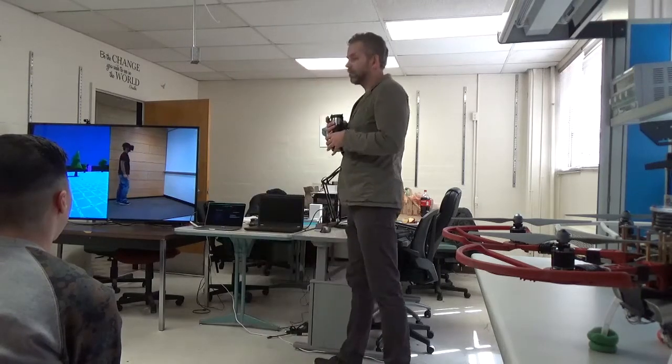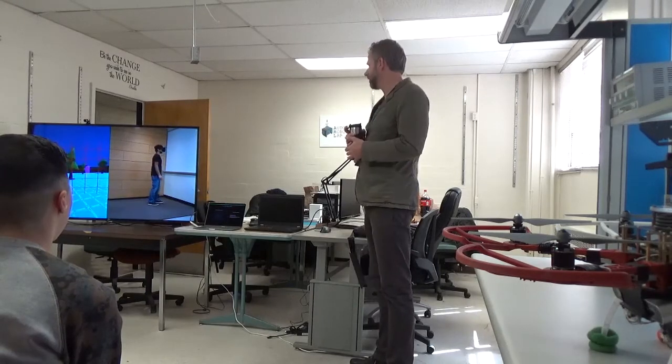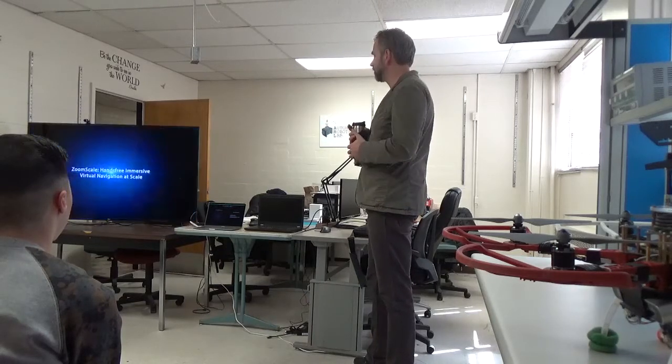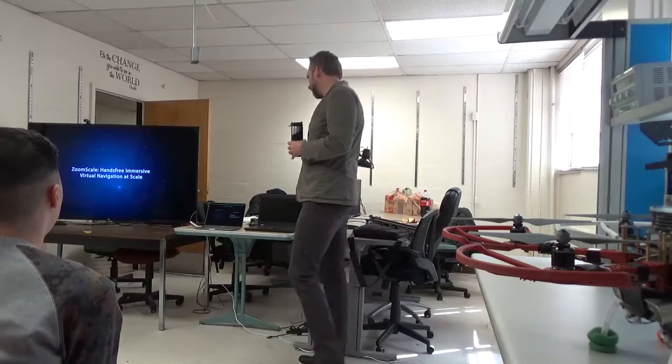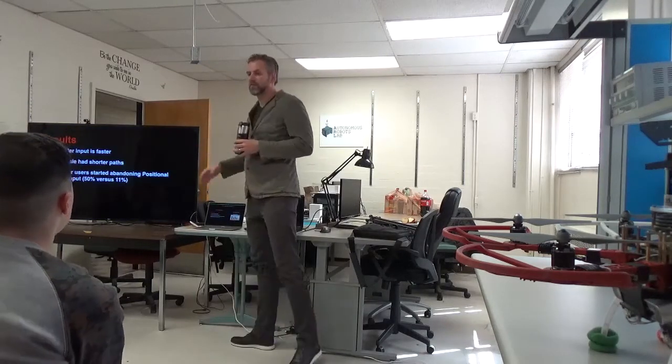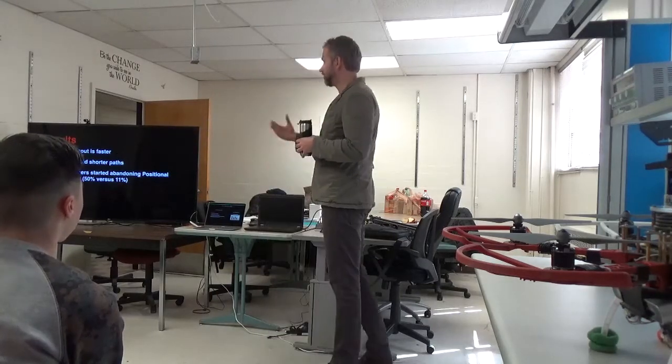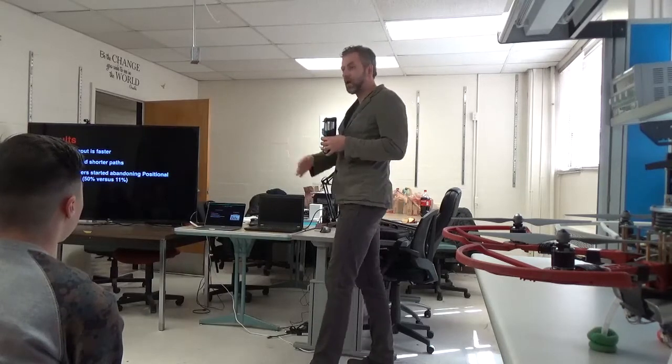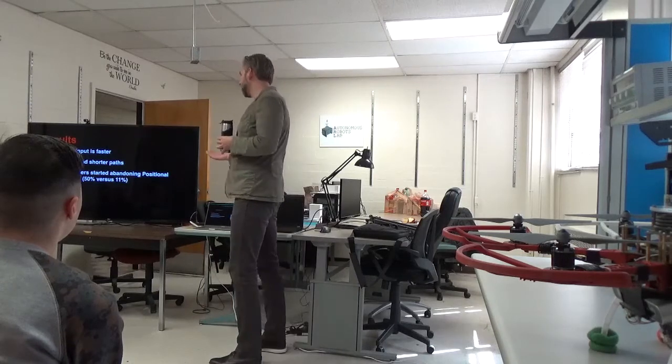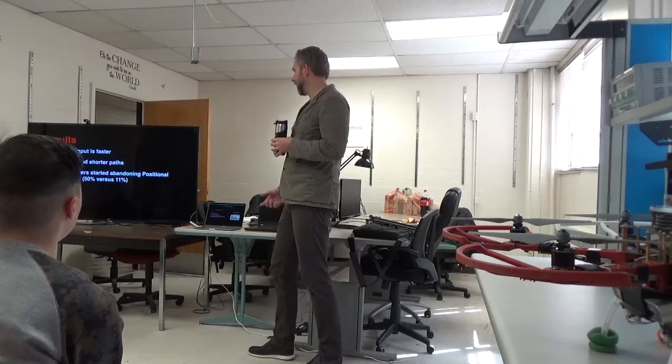So we're scientists. So when we come up with a new interaction technique, we obviously have to compare it to what is currently used. So controller input is most commonly used for teleportation. So we basically compared it to controller input. So we had people basically follow a number of waypoints. So there was like a waypoint that was far away, so they had to transition to a different locomotion technique. And there were waypoints that were close by so they could walk to it. So we had a bunch of people do that. And then we found, of course, controller input is faster. But zoom scale, which is basically your hybrid technique, had shorter paths.